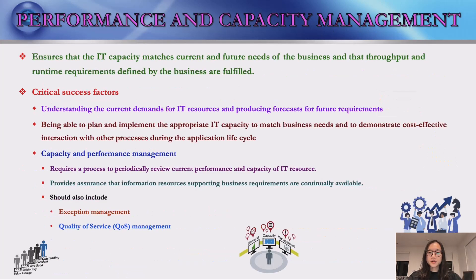Next, we are going to introduce performance and capacity management, which ensures that the IT capacity matches the current and future needs of the business. It also ensures the throughput and runtime requirements defined by the business are fulfilled. The critical success factors include understanding the current demands for IT resources, producing forecasts for future requirements, planning and implementing appropriate IT capacity to match business needs, and demonstrating cost-effective interaction with other processes during the application lifecycle.